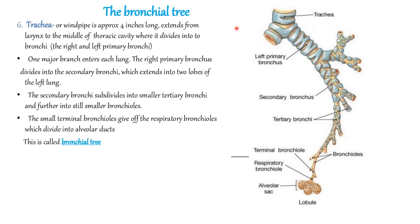The larynx is in continuation with the trachea. The trachea is 10 to 12 cm in length. It runs through the neck in front of the esophagus and has C-shaped cartilage rings — 16 to 20 of them — which prevent collapsing of the trachea. It is lined by ciliated pseudostratified epithelium and contains mucus glands which help in trapping dust particles and preventing them from entering the lungs.